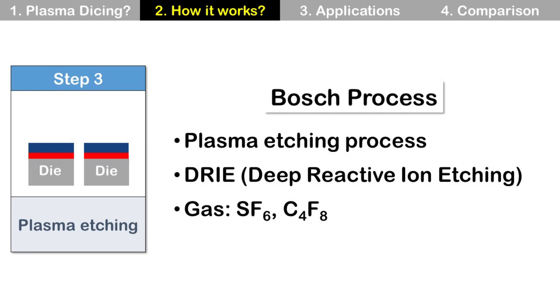Step 3: Plasma Etching. In this process, wafer dicing is completed by plasma etching of the wafer. This plasma etching is a deep reactive ion etching process using two different gases and is also called the Bosch process.